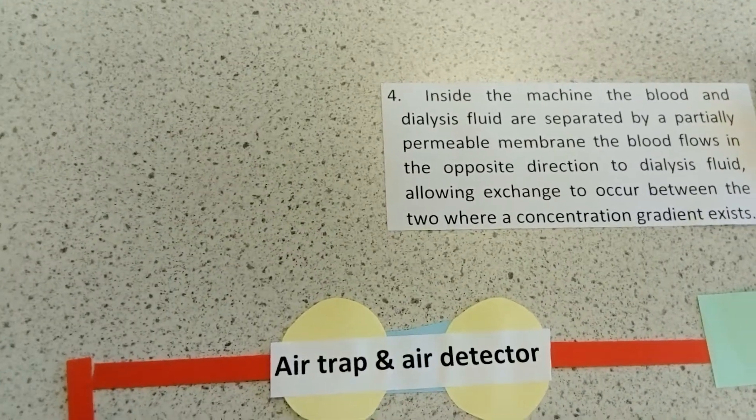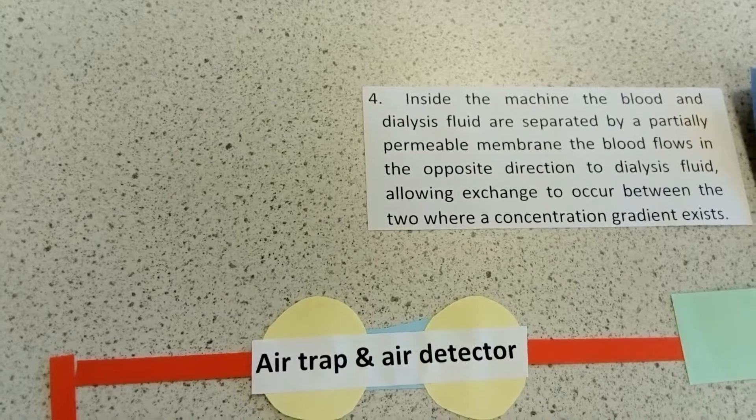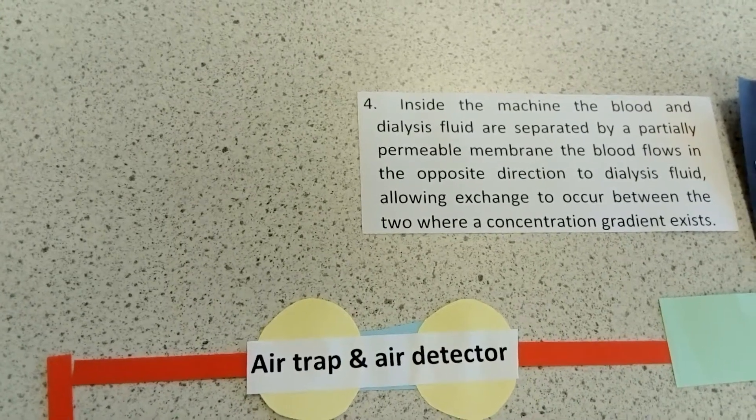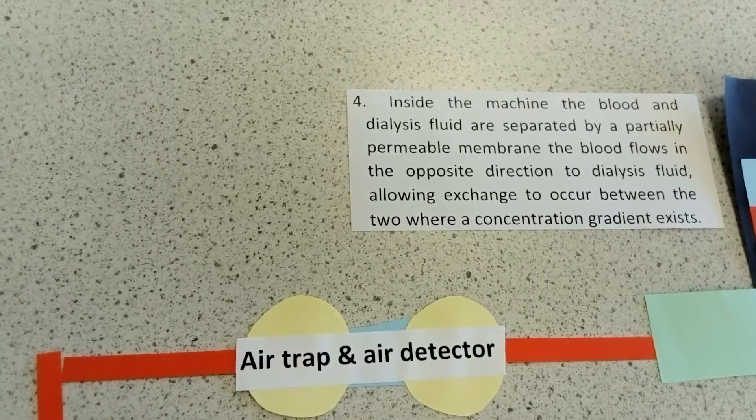Inside the machine, the blood and dialysis fluid are separated by a partially permeable membrane. The blood flows in the opposite direction to the dialysis fluid, thereby maintaining a concentration gradient.